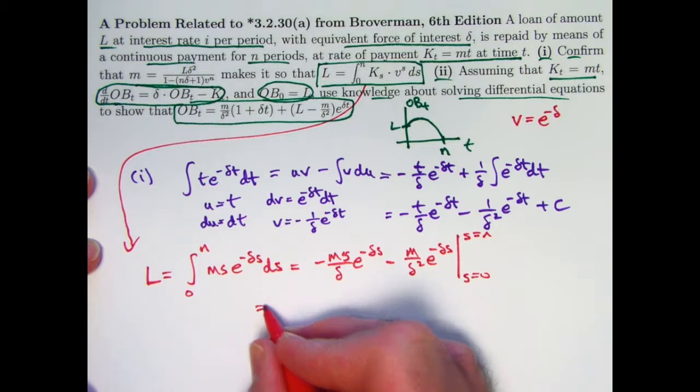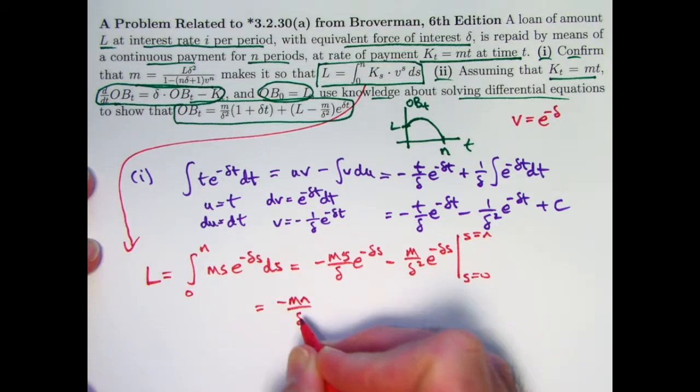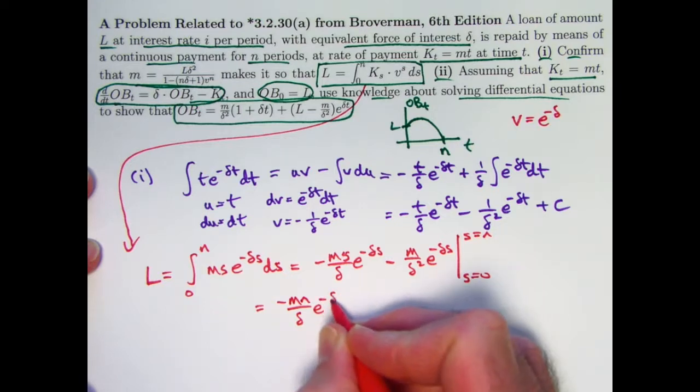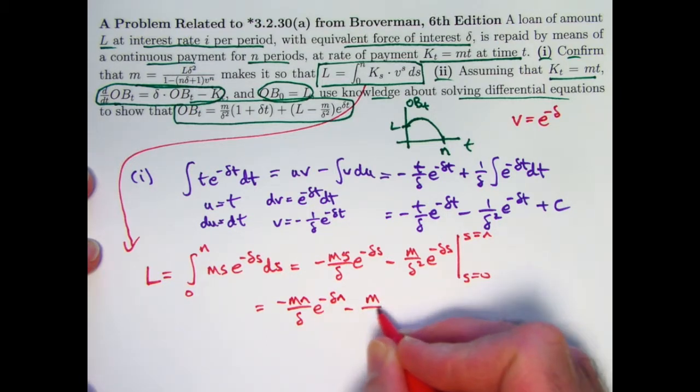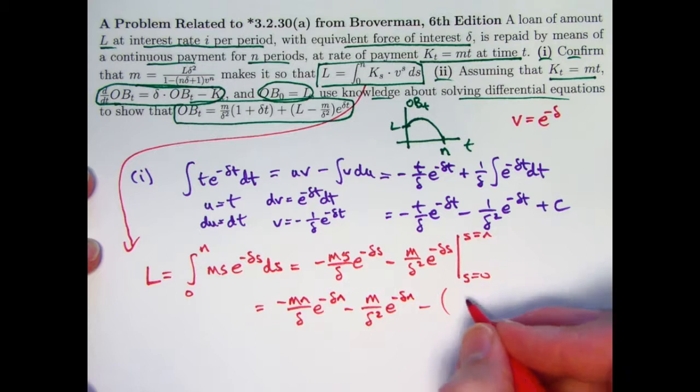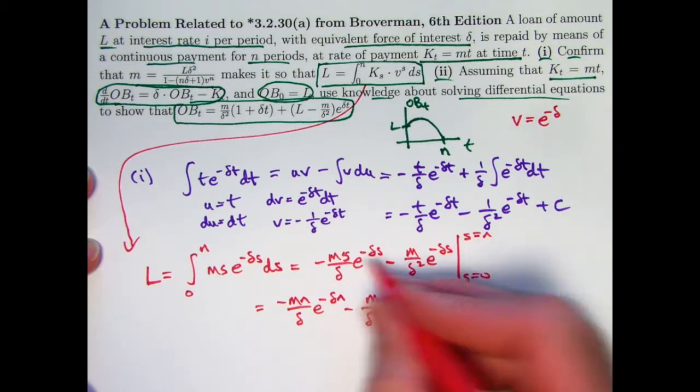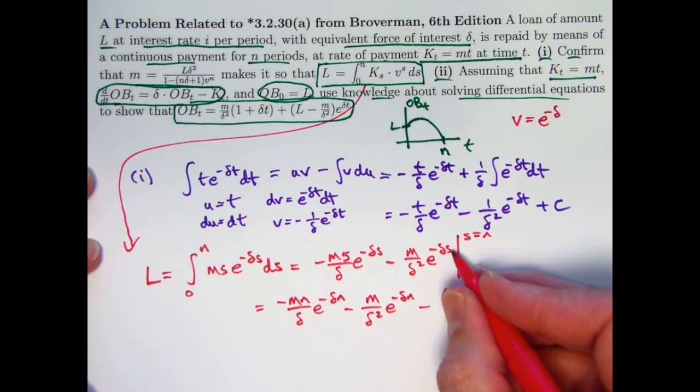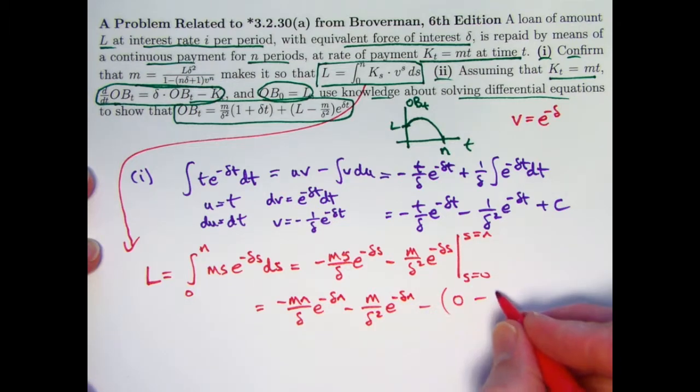Now plug in S equals N first. We get negative M N over delta E to the negative delta times N minus M over delta squared E to the negative delta N. Subtract what we get when we plug in 0. S is 0 makes this 0. E to the 0 is 1. So this becomes a minus M over delta squared.